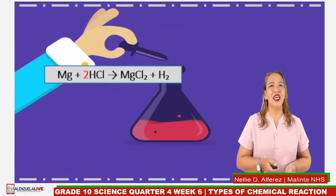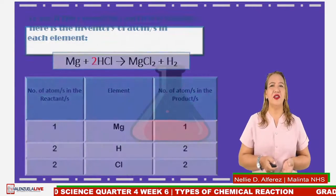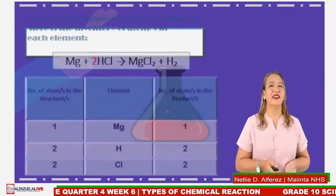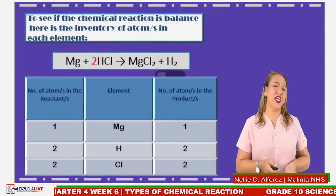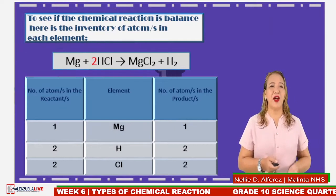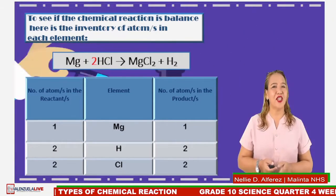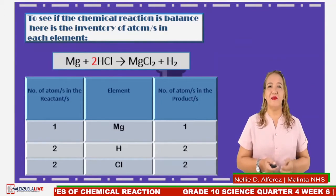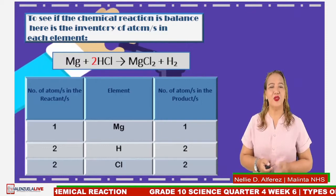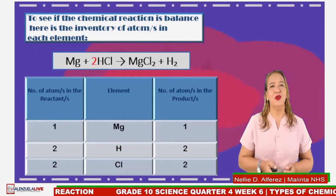To see if the chemical reaction is balanced, here is the inventory of atoms in each element. Magnesium in the reactant side is 1 and in the product side is also 1. Hydrogen in the reactant side is 2 and in the product side is 2. Chlorine in the reactant side is 2 and in the product side is 2. So it is balanced.